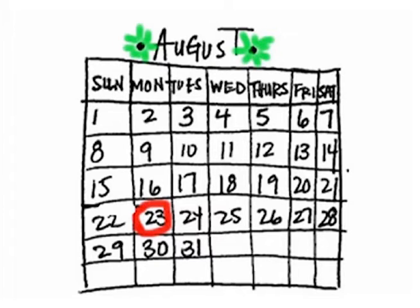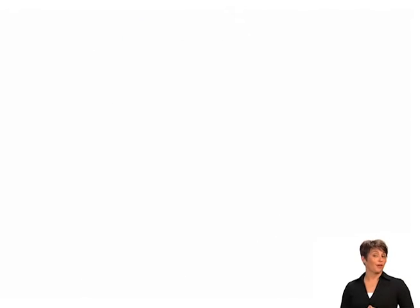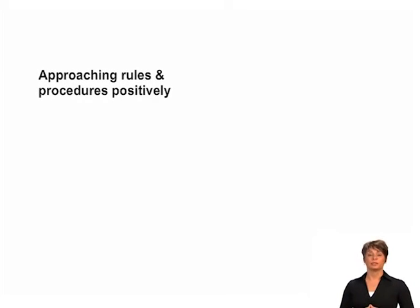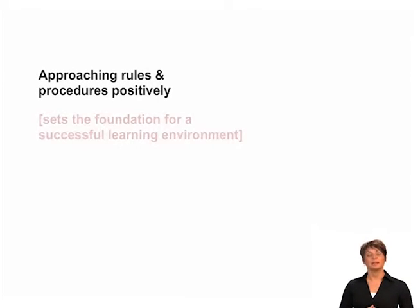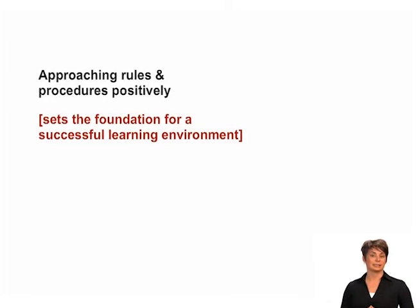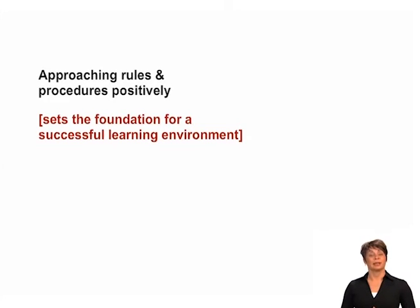Like this teacher, do you take the time at the beginning of the year to talk with your students about your expectations for their behavior — both in terms of how they treat one another (rules) and how they engage in activities (procedures)? Do your students know that rules and procedures exist so that they have every opportunity to succeed? Approaching classroom rules and procedures in a positive way sets the foundation for a successful learning environment. Now we'll hear how another teacher approaches her classroom rules and procedures in a positive way.